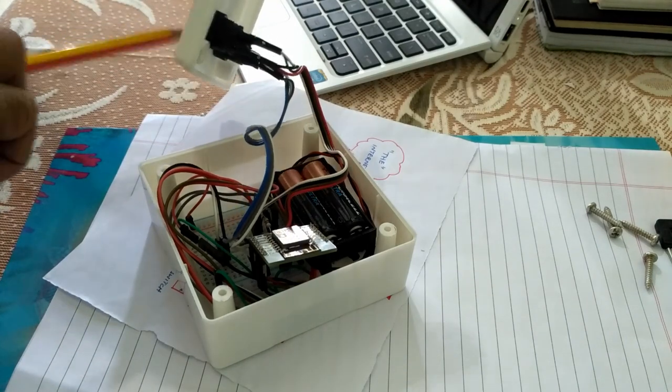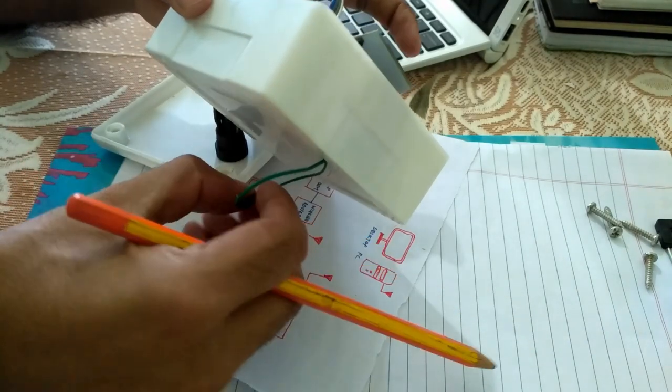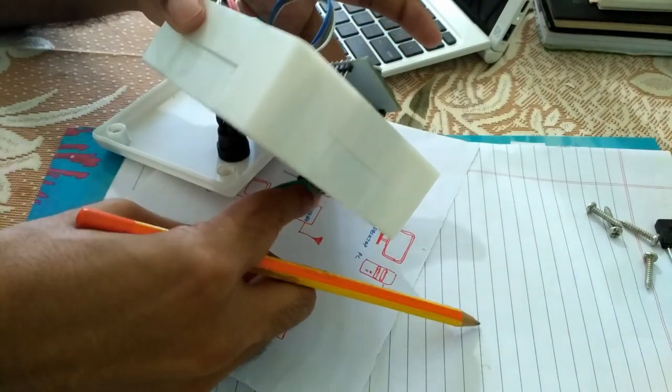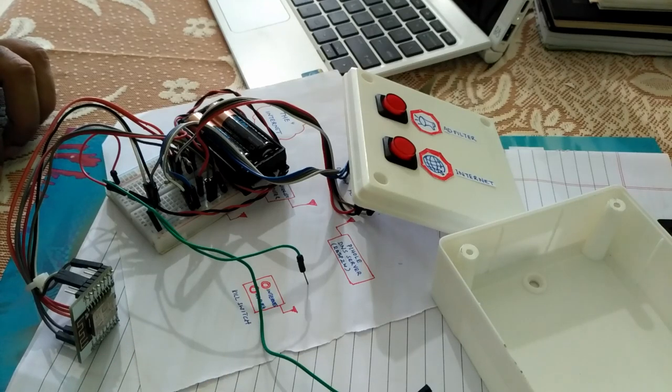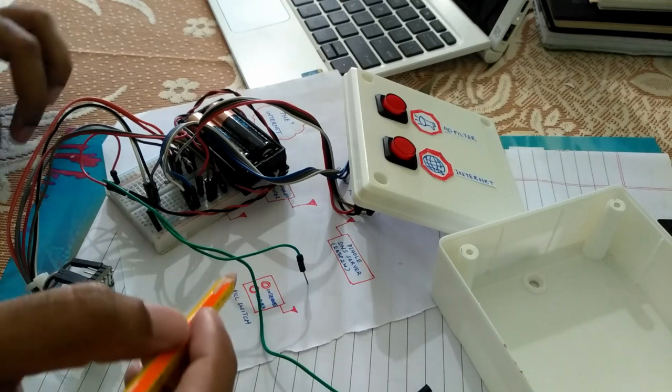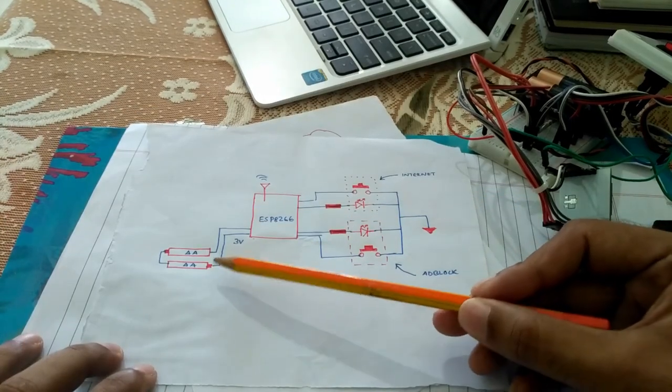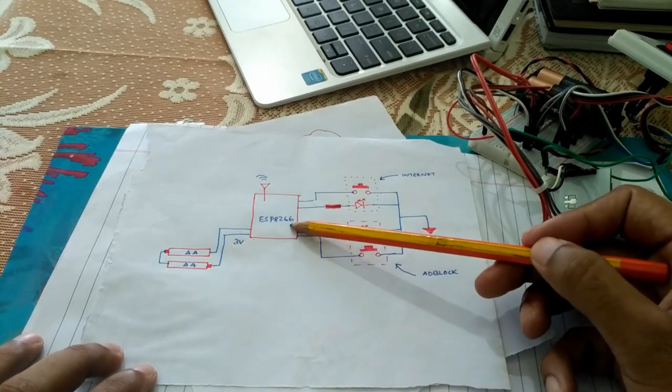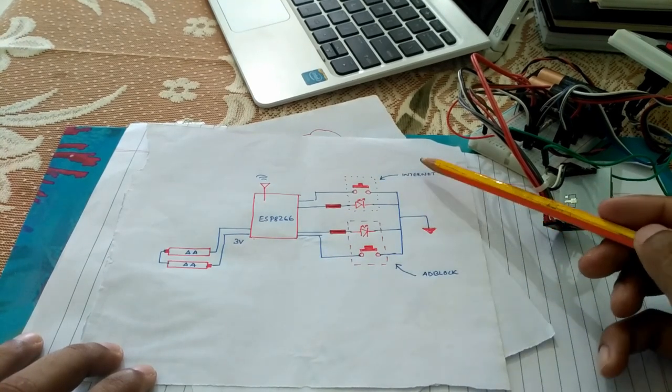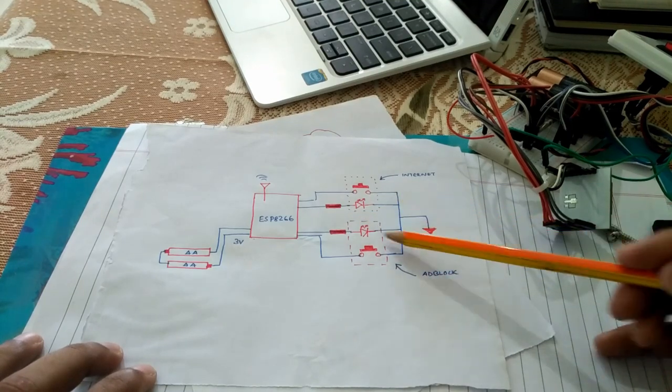We have some breadboard connections and of course the push button switches along with the LEDs. I'll just disconnect the power for a moment so that nothing happens. I'll take another drawing and show you how the connections are really happening inside. You have two double-A cells powering the ESP8266 and you have the internet push button and the ad block push button. This is how you are connecting the system.